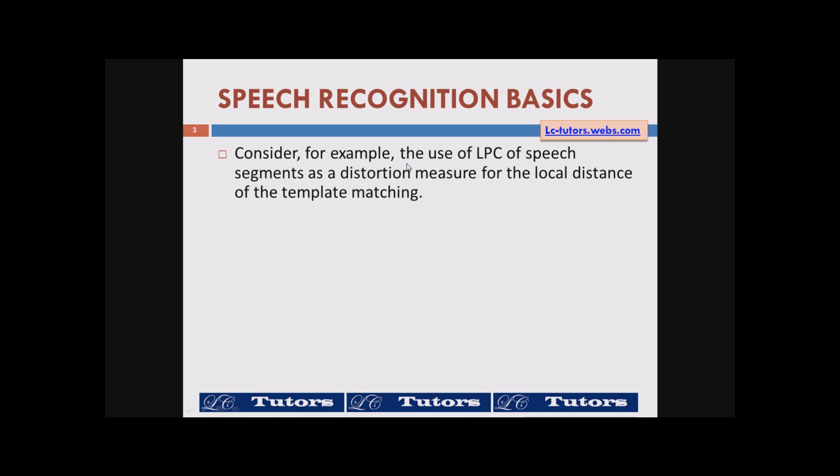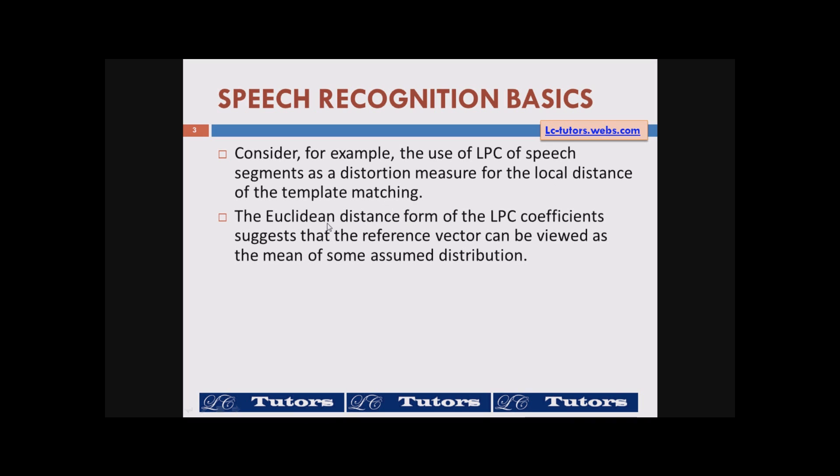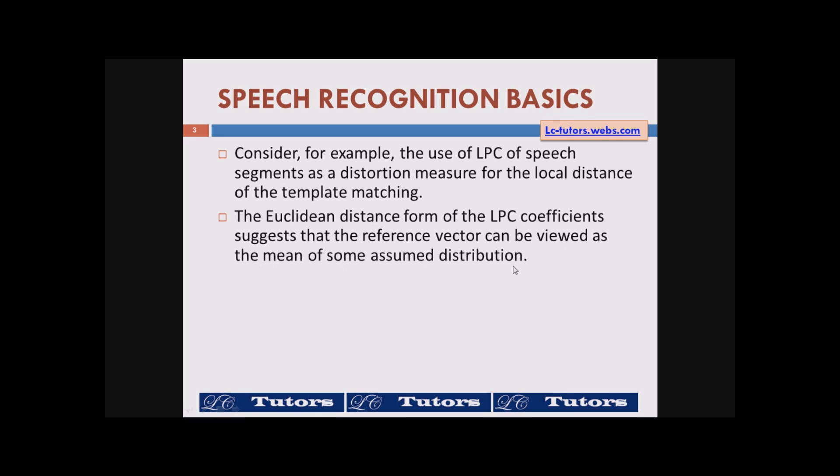Consider for example the use of LPC linear predictive coding of speech segments as a distortion measure for the local distance of the template matching. The Euclidean distance form of the LPC coefficients suggest that the reference vector can be viewed as the mean of some assumed distribution. This simple form of sufficient statistics neglects the time dependency of speech signals which is often very useful in recognition speech utterances.